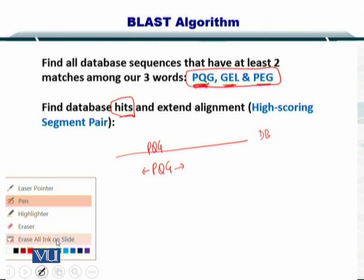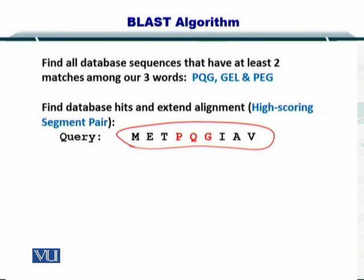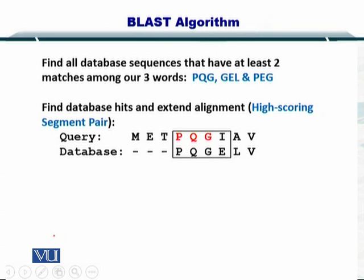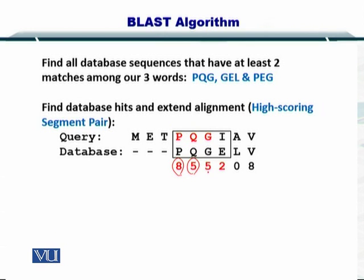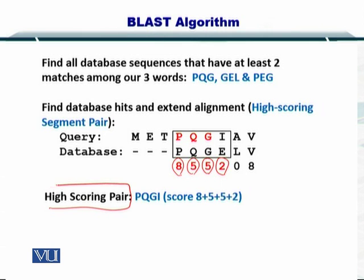Let's see how we do that. If your query had this sequence and your database gave you something like that, you can see there is a match for one word and a mismatch between I and E. You compute the score for this four amino acid window, and the scores for each position are given here. The highest scoring pair, or HSP, is the sum of these scores — about 20. So your PQGI has a score of 20.